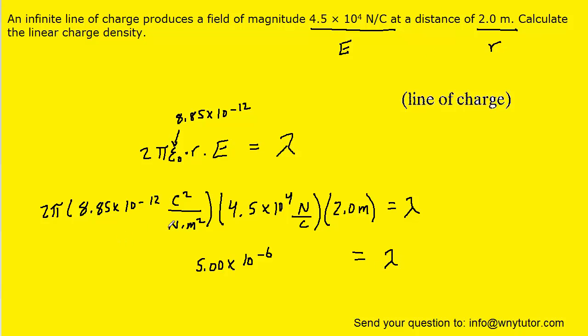And then dimensionally, we can see that the newtons will cancel. We will have a factor of coulombs cancel, and then the meters will also cancel. And so we are overall left with coulombs per meter, which is indeed the standard unit for linear charge density. And so this is the correct answer to the question.